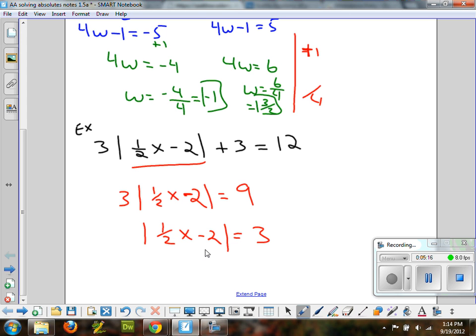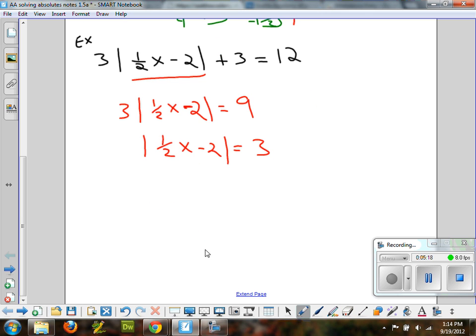2 problems. 2 equations. So, either the 1 half x minus 2 is going to be equal to the negative of 3 because you can replace this part with negative 3. You can substitute it out. You can make it equal. Substitute it out and it would be true. It could also equal, though, the positive. The positive 3.